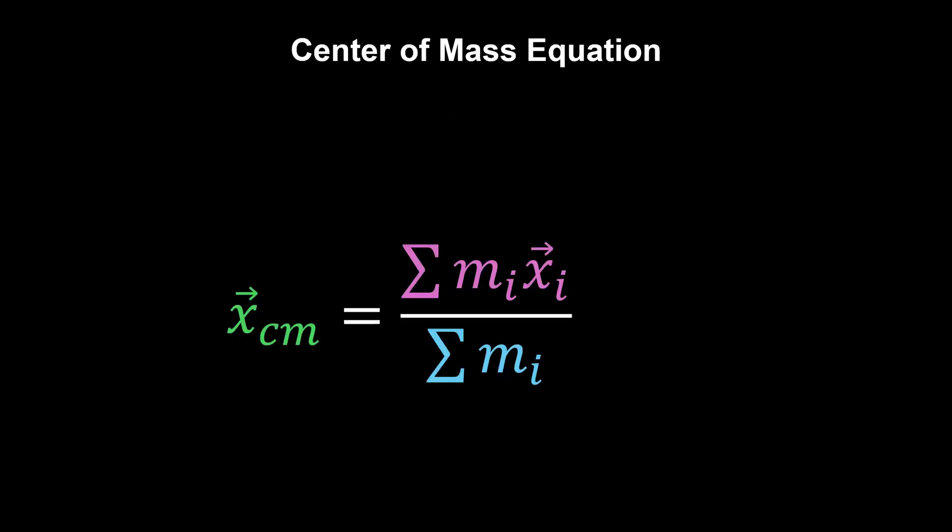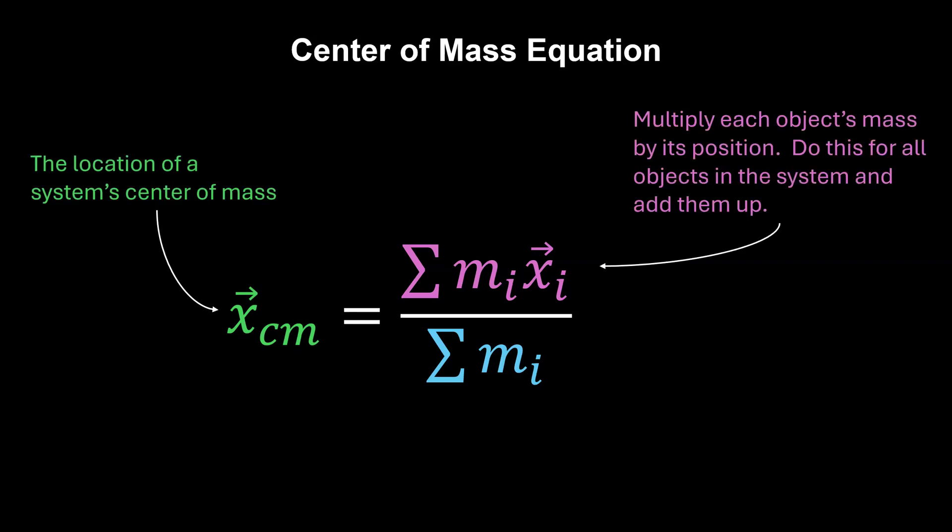To find the location of a system's center of mass, multiply each object's mass by its position along an axis. Do this for all of the objects in the system and then add them up. Whatever you get belongs in the numerator.